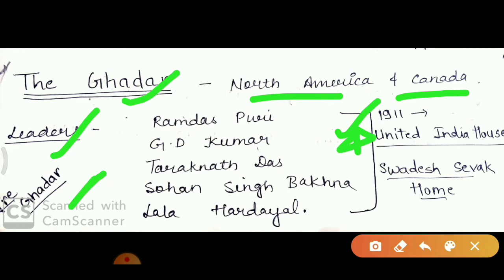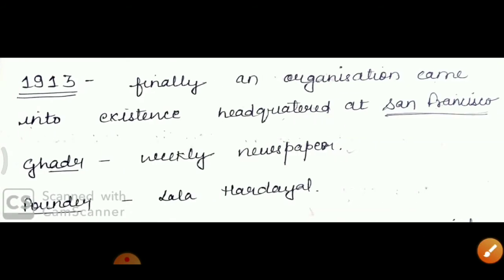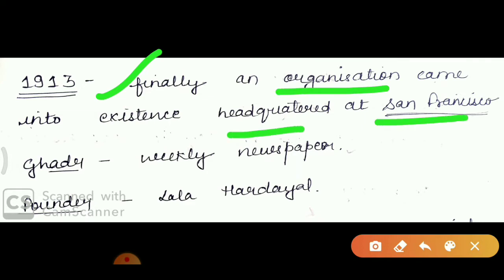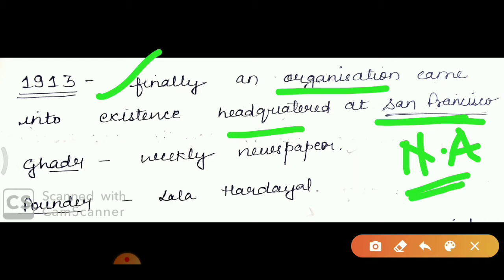These two different parties remained revolutionary and kept the British afraid of revolutionary activities. Later, when Canada itself was a British colony, revolutionaries emerged. In 1913, another location came into focus — the headquarters in San Francisco, North America. From Canada, they came to North America, and in San Francisco, they organized the GADR party.